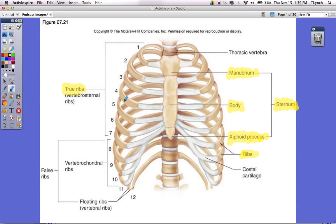You should have labeled the true ribs, which are basically ribs 1 through 7. Ribs 1 through 7, if you notice, are directly attached to the sternum via this costal cartilage. I'm going to go ahead and highlight that. You should have also labeled the costal cartilage.